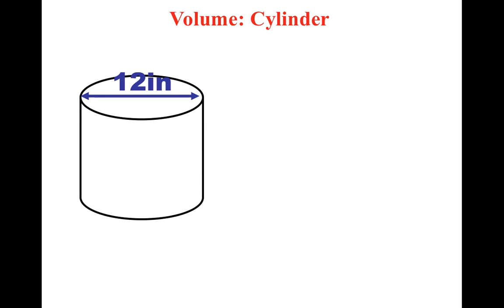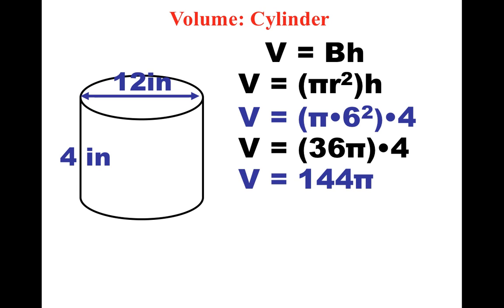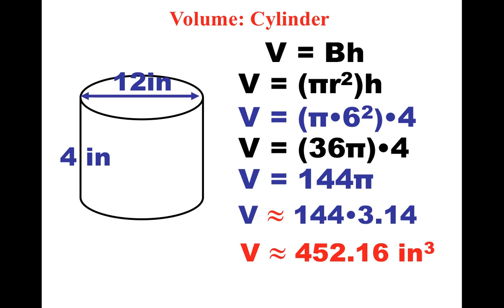All right, so here's this one. Step one, write formula. Step two, plug in numbers. However, they didn't give us the radius, they gave us the diameter. So for the radius, I had to plug in six because that's half the diameter. Step three, get answer. 144 times 3.14 is 452.16 inches cubed.